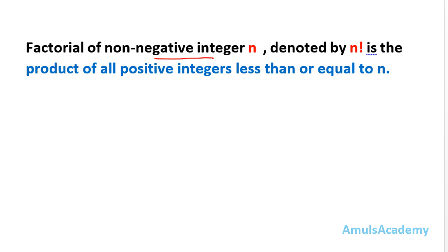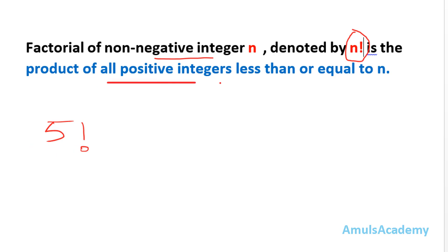We are not talking about the factorial of negative integers. The factorial of any number is denoted by this symbol. For example, if I want to find out the factorial of 5, I will write it like this — 5 factorial — and this is the product of all positive integers less than or equal to 5.